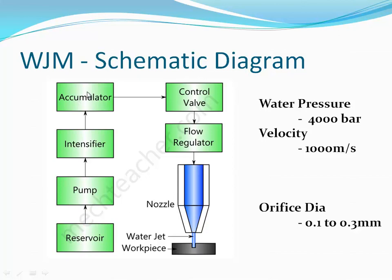The high-pressure water gets collected in the accumulator, and then through a control valve and a flow regulator it is allowed to flow into the nozzle. All the piping used must be metallic because unlike gaseous pressure, the pressure of liquid is very very high. If you use normal plastic piping which deforms easily, there are chances of leakage or bursting. You have to be very careful with all these components.